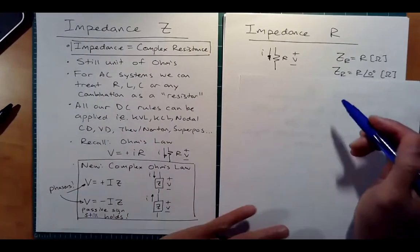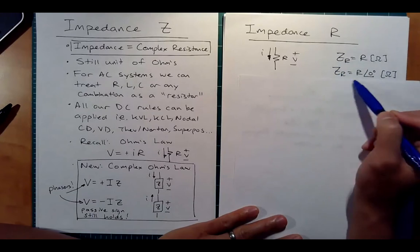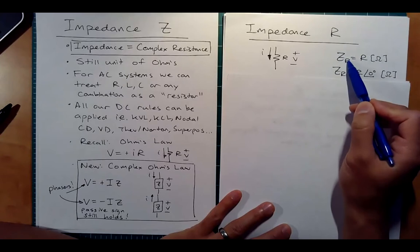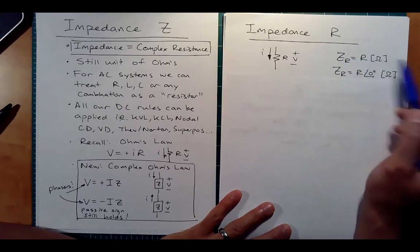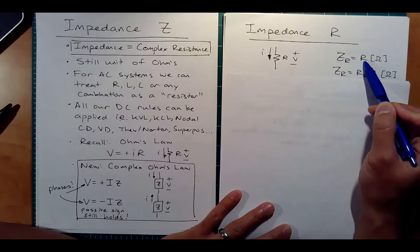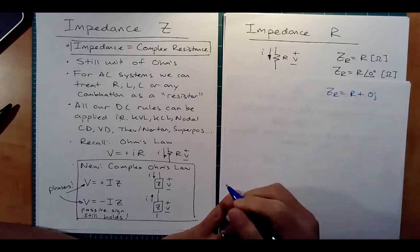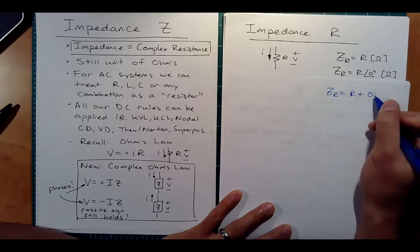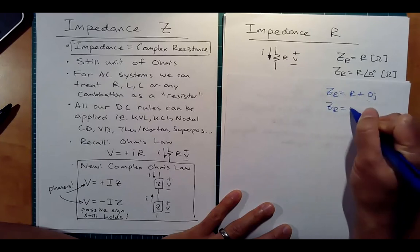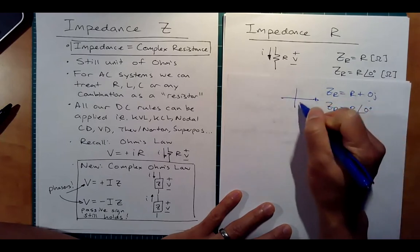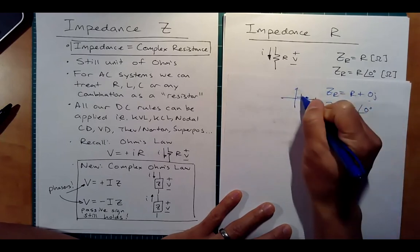Let's look at the impedance for a resistor — these facts you just have to memorize. The impedance ZR of a resistor is just the resistance itself. In rectangular form, it's R plus 0J, so ZR equals R plus 0J — it just doesn't have any imaginary component. The magnitude is R with an angle of zero degrees. If we plot it on the complex plane, we have a vector of length R along the real axis.